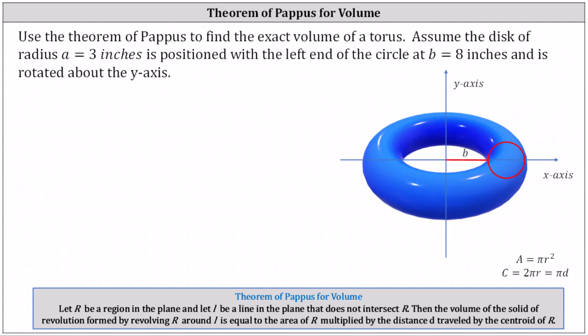Use the theorem of Pappus to find the exact volume of a torus shown below. Assume the disc or circle of radius A equals three inches is positioned with the left end of the circle at B equals eight inches and is rotated about the y-axis.